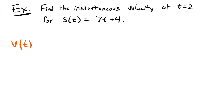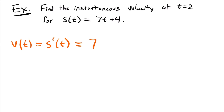The velocity function v(t), which is the derivative of the position function, equals 7 times 1 times t to the 1 minus 1 power by the power rule. That gives us just 7, since t to the 0 is 1. The derivative of the constant 4 is 0. So our instantaneous velocity function is simply 7. Plugging in t equals 2, it's still 7 — there's no variable t in the expression, so the instantaneous velocity at any point in time is 7.